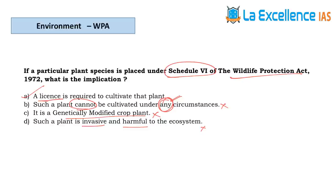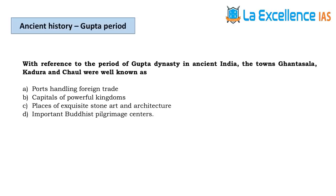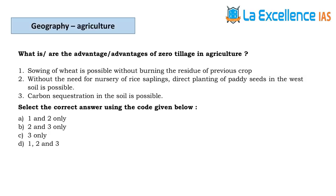The next question is a factual question about the Gupta dynasty. The towns Gantasala, Kadhura, and Chaul were known as ports handling foreign trade. Not much to explain here.